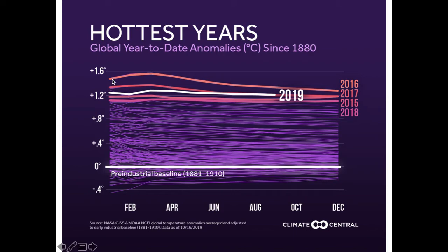Interestingly, you can see it was hotter than any year previously the entire year — it wasn't that one season was a lot hotter than normal; the whole year was much hotter. This shows data from 2019 for part of the year. It also highlights 2019, 2015, 2017, 2016, and 2018.